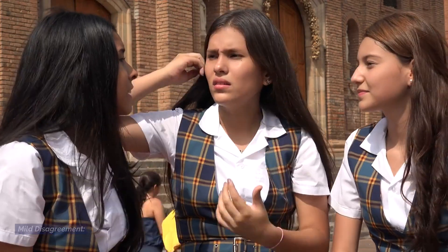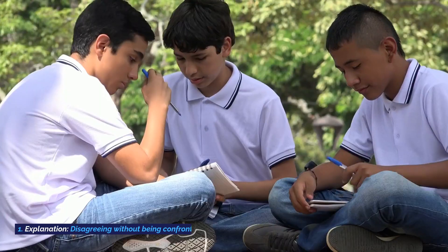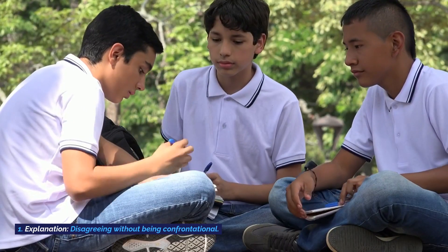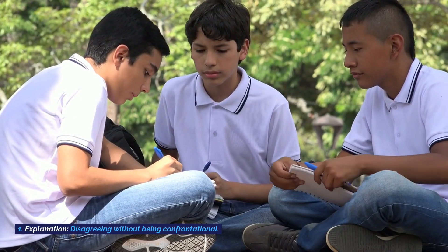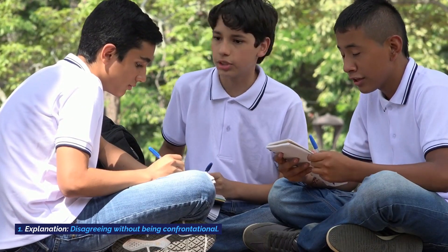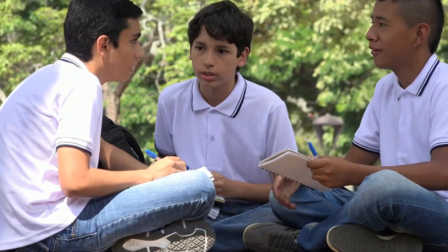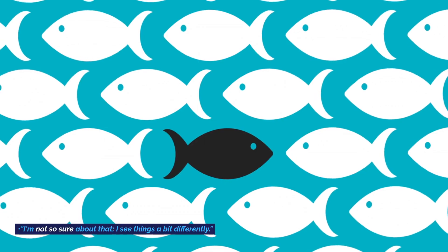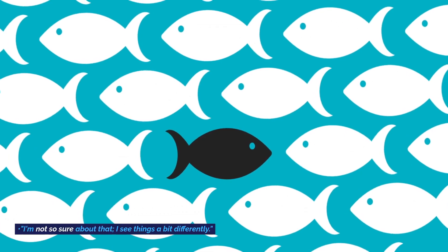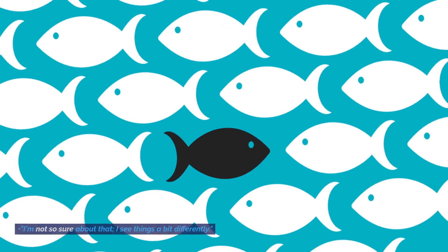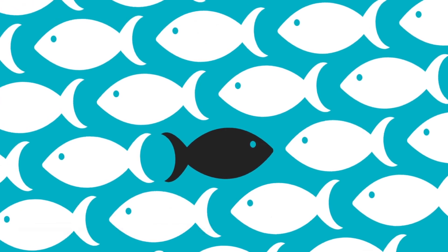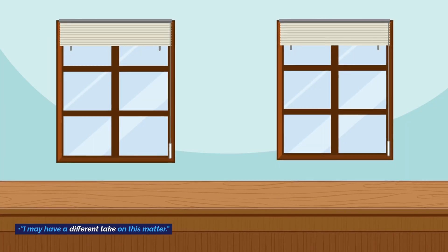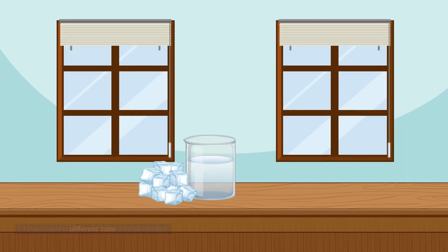Mild disagreement. Explanation: disagreeing without being confrontational. Examples: 'I'm not so sure about that.' 'I see things a bit differently.' 'I may have a different take on this matter.'